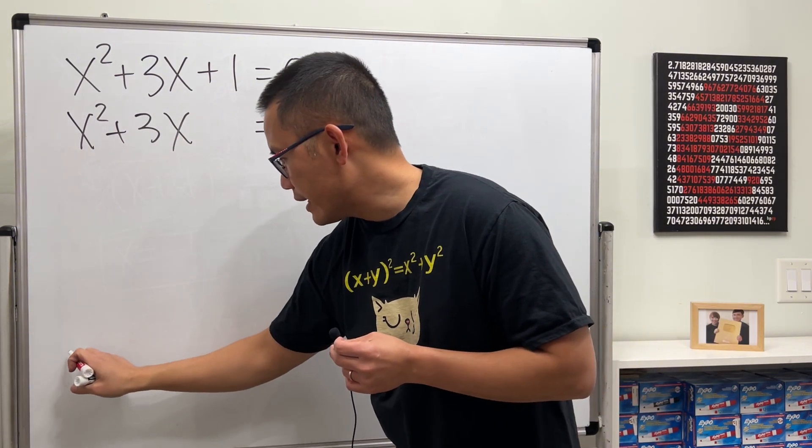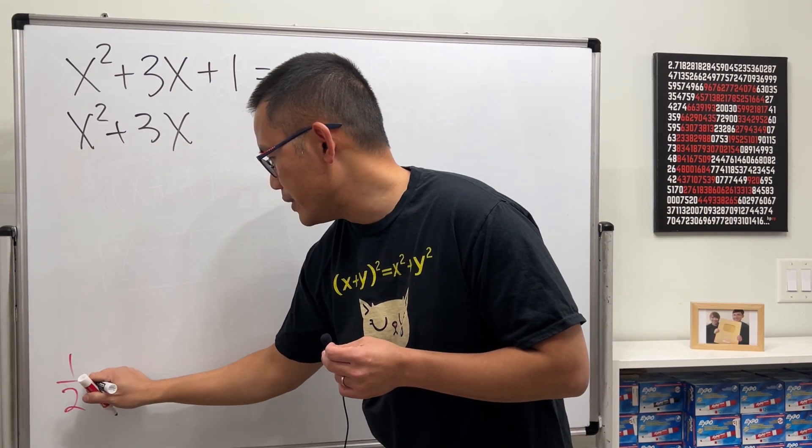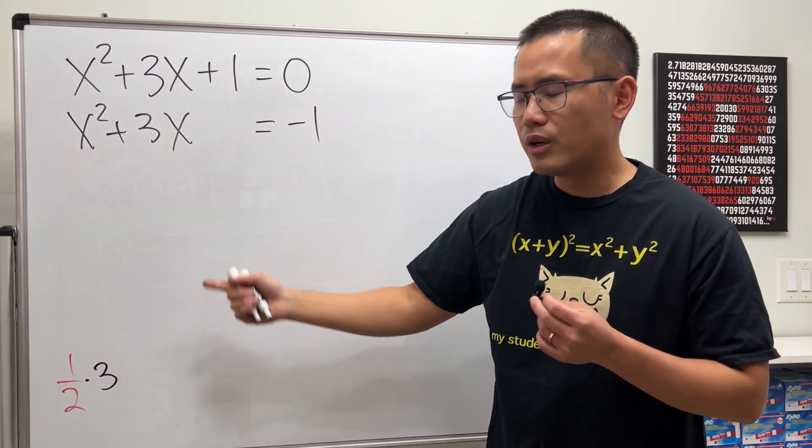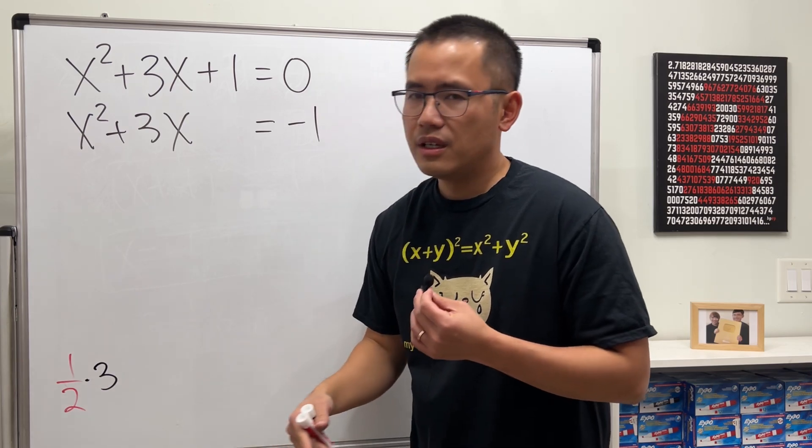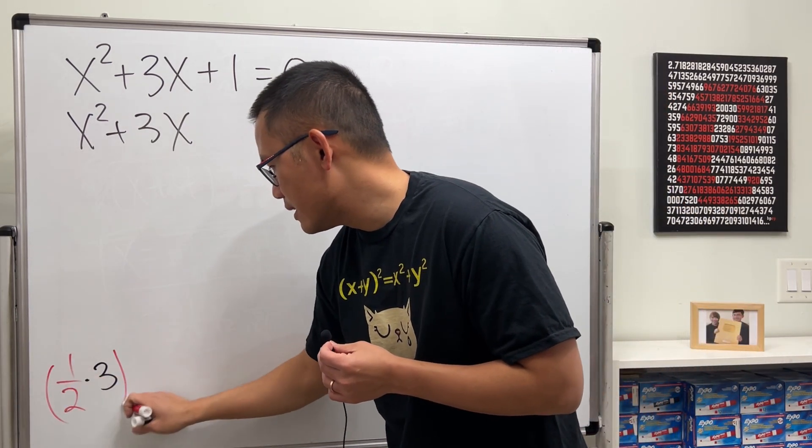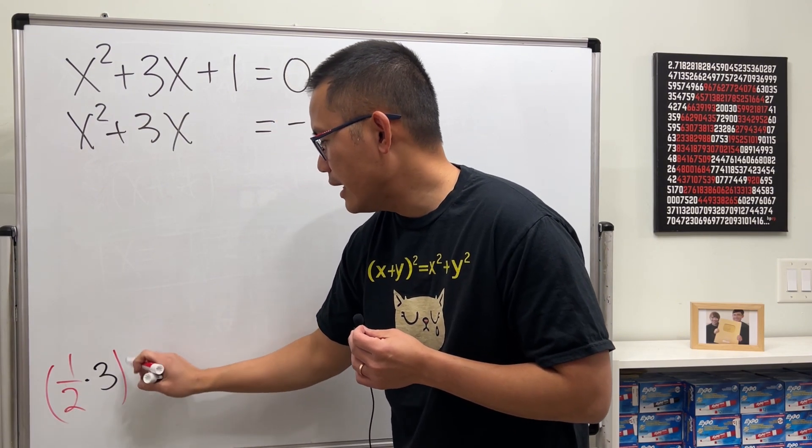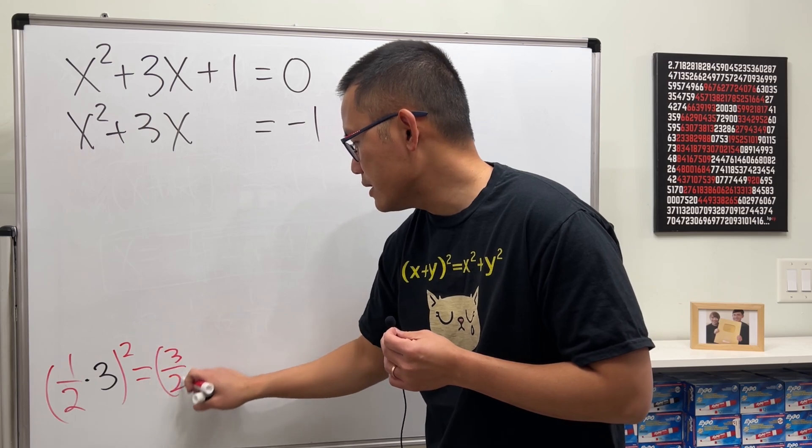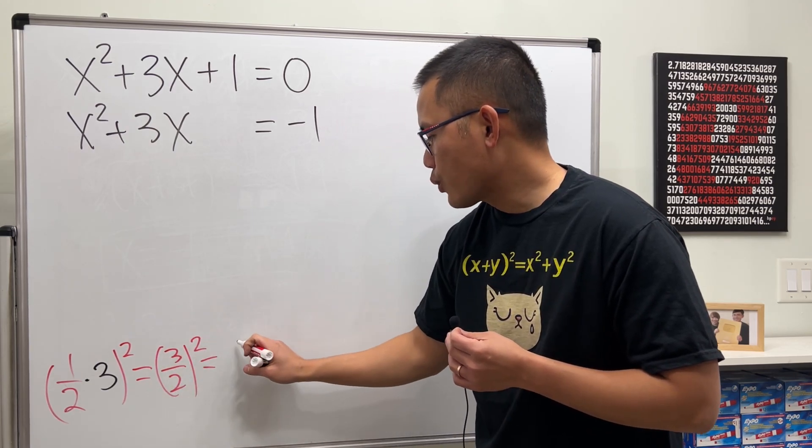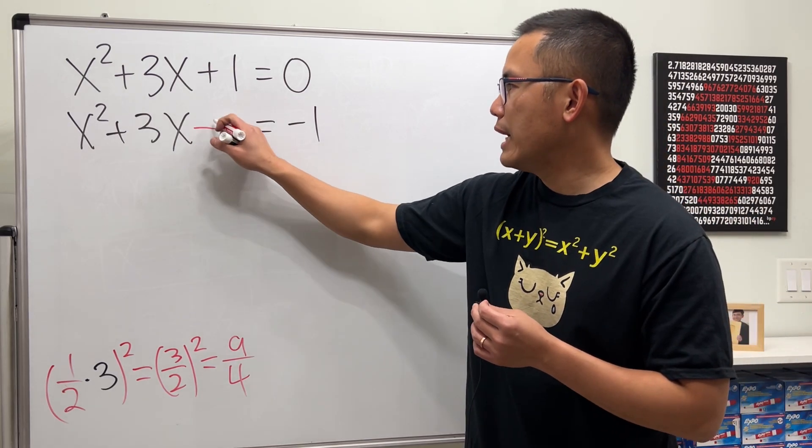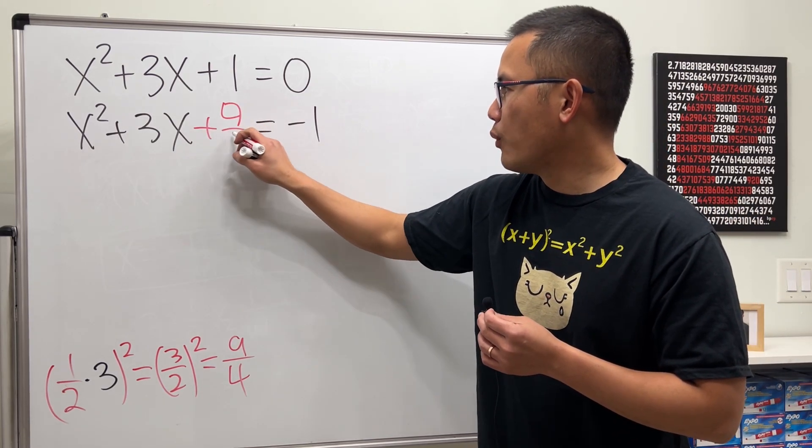Then we are going to look at this number, which is 3. We take half of 3. Notice this time, because 3 is an odd number, when we take half of it, we have to deal with fractions. It's not so bad, I'd say. Take half of 3 and then square that, which is (3/2)². So 3² is 9, 2² is 4. That means we will have to add 9/4 to both sides.